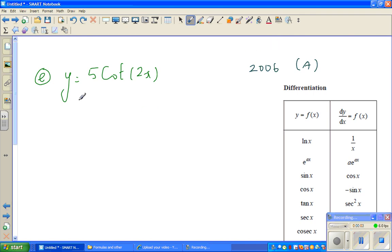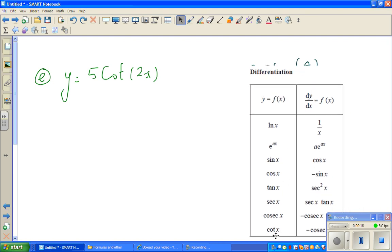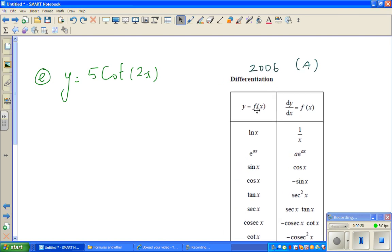Continuing from the last video, let us differentiate this function, which is a quite easy function. y is equal to five cot 2x. So I copied and pasted the formula sheet. cot x differentiates to minus cosec squared x.